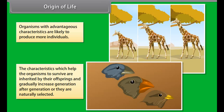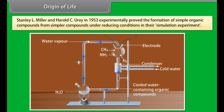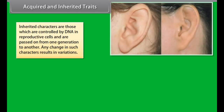The origin of life is best explained by Darwin's theory of natural selection. The three main points are: each organism has an ability to survive and reproduce; during reproduction, organisms show variations in many characteristics within the species; and organisms with advantageous characteristics are likely to produce more individuals. Characteristics which help organisms survive are inherited by their offspring and gradually increase generation after generation — they are naturally selected.